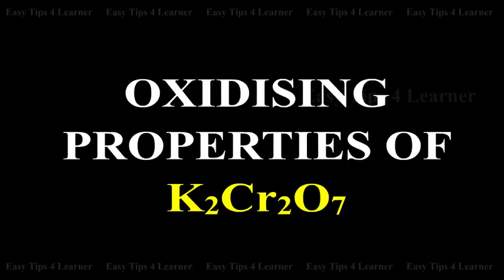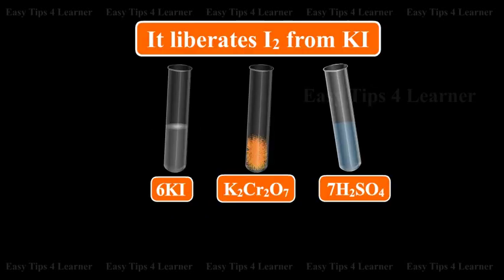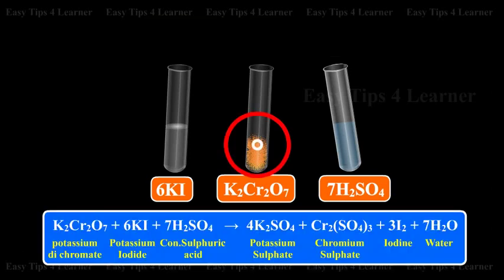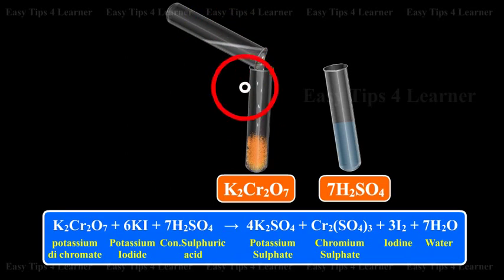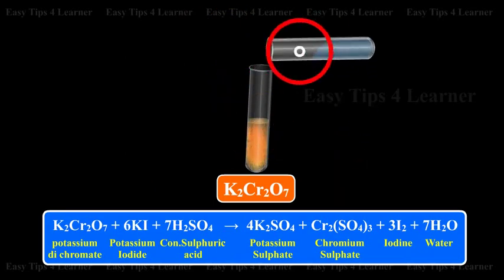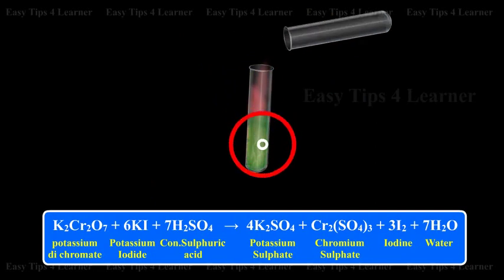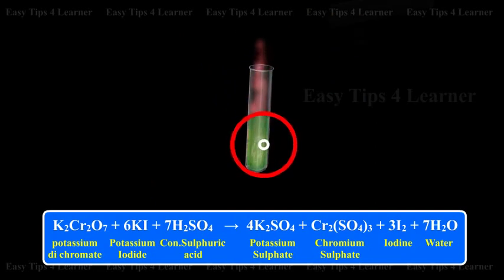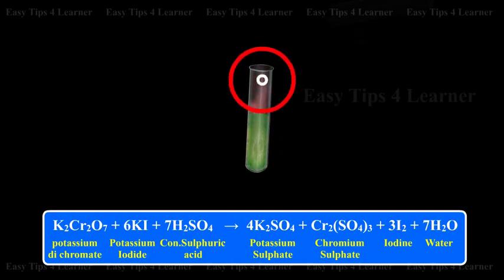Oxidizing properties of potassium dichromate: It liberates iodine from potassium iodide. Potassium dichromate + potassium iodide + concentrated sulfuric acid gives potassium sulfate + chromium sulfate + iodine + water.